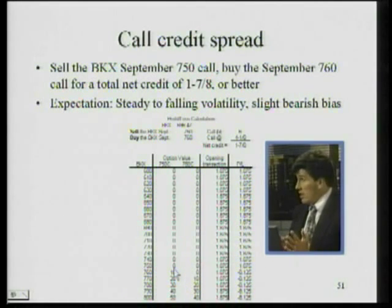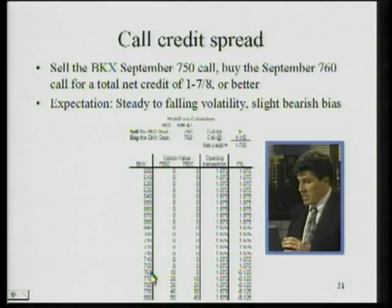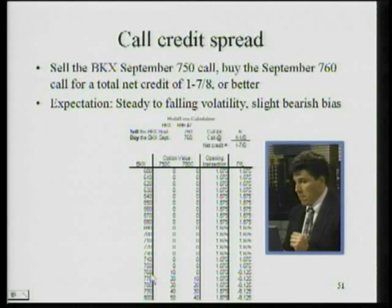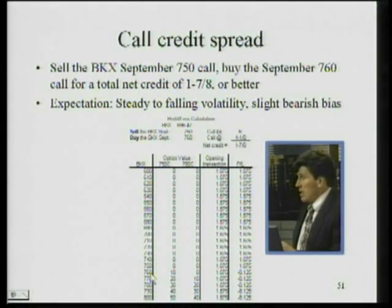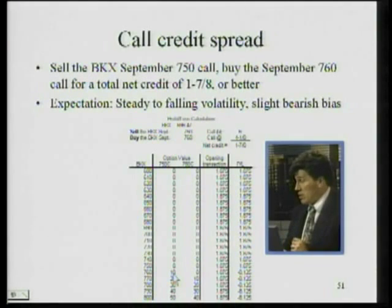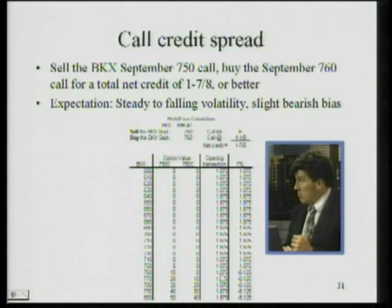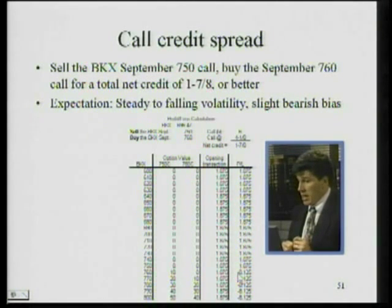It's once you get above 750 that things start to happen. At 760, the person who is long the 750 call could buy it from us at 750 and immediately sell it for 760, thereby netting 10. We would lose 10 — we're short that option, so we would have to buy it back at 10. That's a minus 10. Plus what we collected — the credit — so it's minus 8 and an eighth.